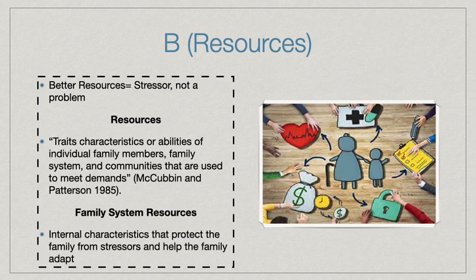Family system resources are internal characteristics that protect the family from stressors and help the family adapt. For example, resources a family could have include wealth, time, health, medicine, and other types of resources available to different families. However, these resources can change from family to family.